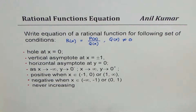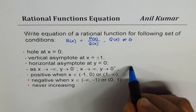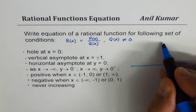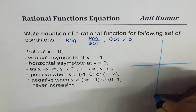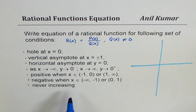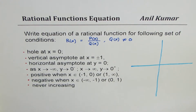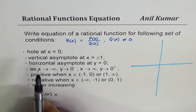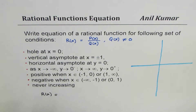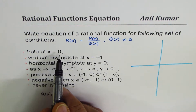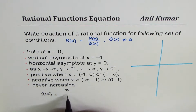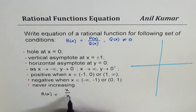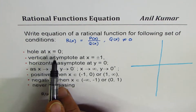What we will do is place the information on the graph and also build an equation from these conditions. So let r(x) be our rational function. The first condition is a hole at x equals 0. That means we have a factor of x in the numerator and a factor of x in the denominator — when they cancel, we get the hole at x equals 0.